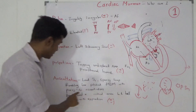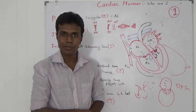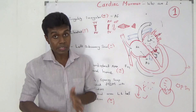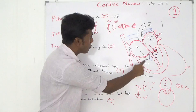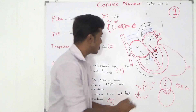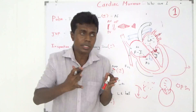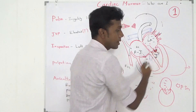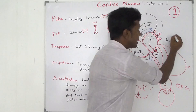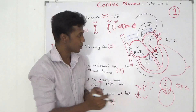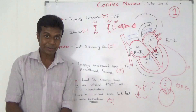This murmur is best heard in the left lateral position with the bell of the stethoscope during expiration. During inspiration, negative pressure in the thoracic cavity increases right-sided blood flow, making right-sided murmurs more pronounced. During expiration, blood is squeezed from the pulmonary veins into the left atrium and left ventricle, increasing left-sided flow — making left-sided murmurs more pronounced. Mitral stenosis is a left-sided murmur, so it is more pronounced in expiration. Thank you very much.